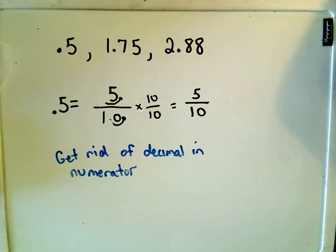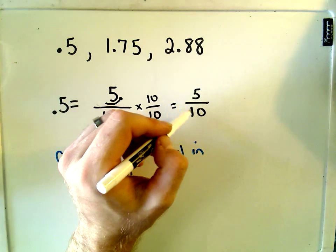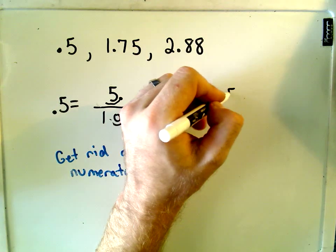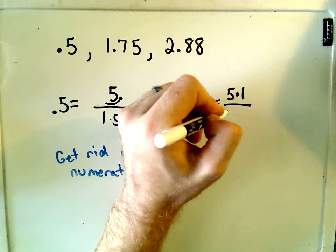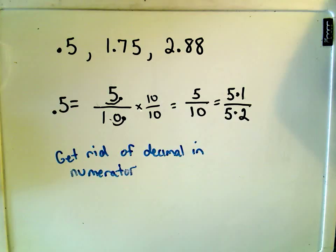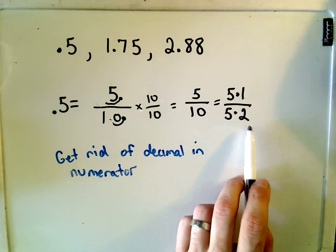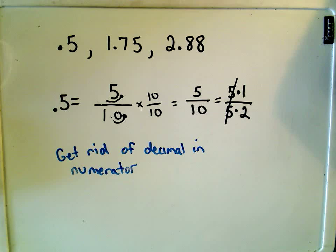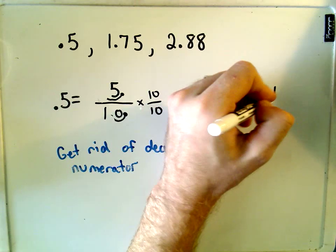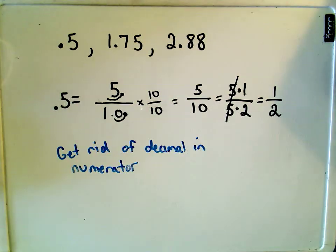And now, I just try to simplify this, if possible. 5 over 10, I can write 5 as 5 times 1, and 10 as 5 times 2. Remember, if you have all multiplication in the top and all multiplication in the bottom, you can cancel out common factors. That just simply leaves us with the fraction 1 half.